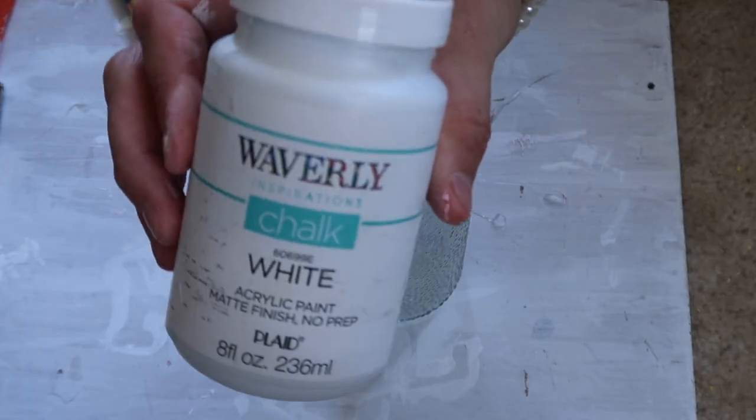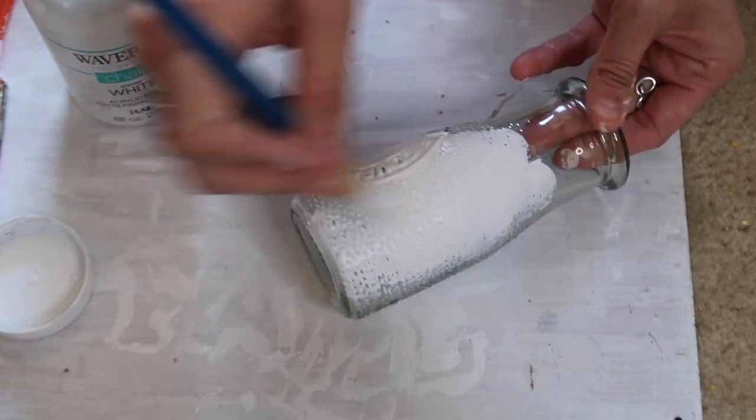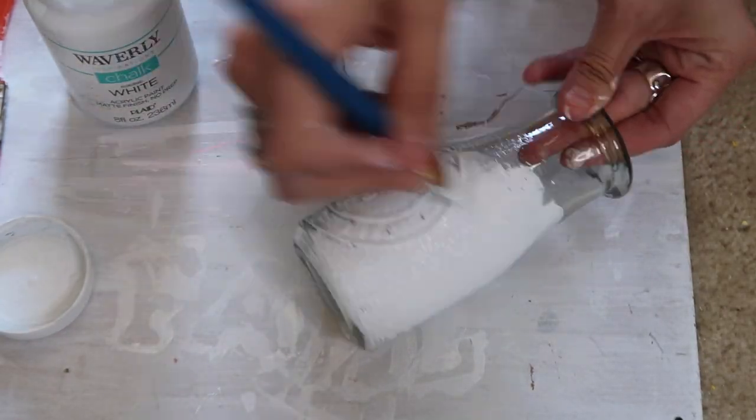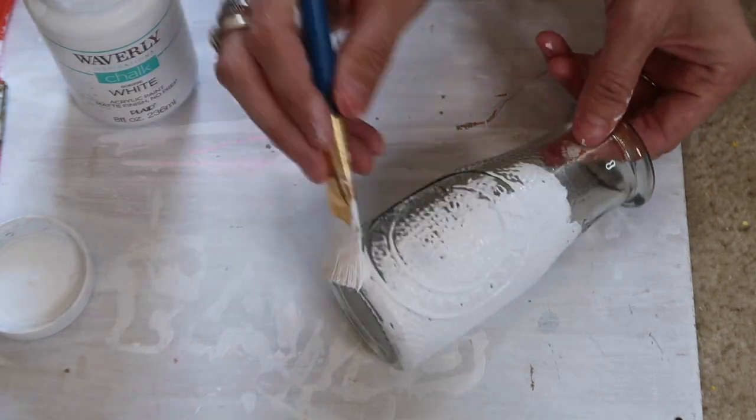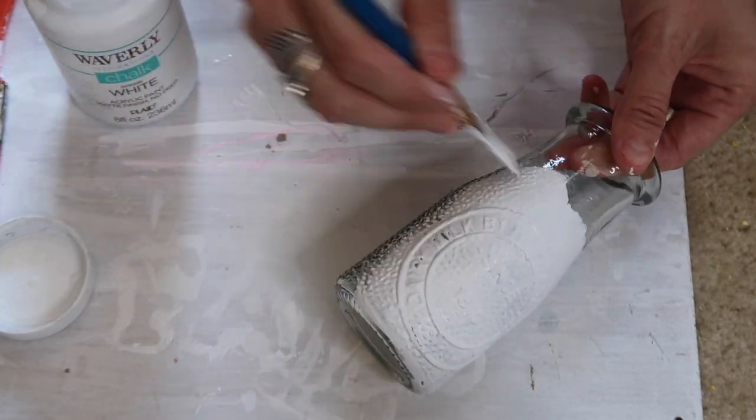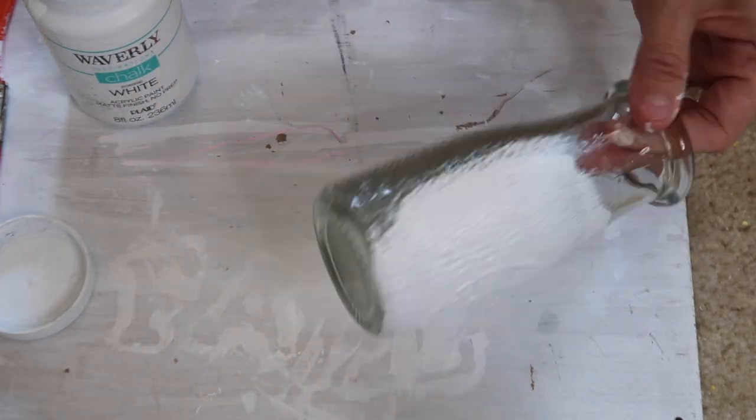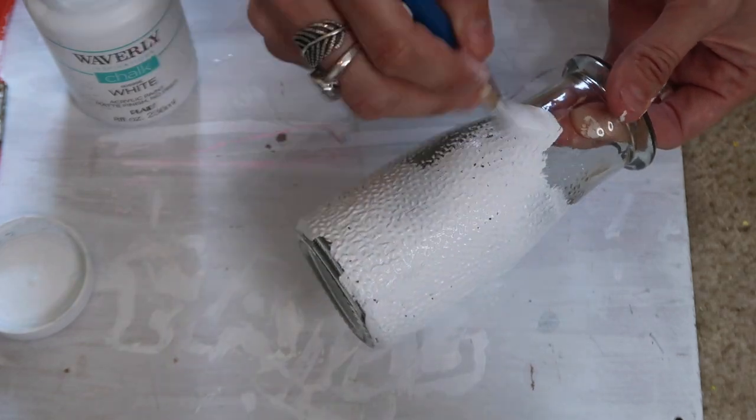So my DIYs are super easy. I'm just going to take two of these little milk jars from the Dollar Tree. I think they're milk jars, that's what I'm going to call them, and I'm just going to paint them with the Waverly chalk paint in white. I did do two coats of this because I wanted them completely covered. I didn't want them distressed, I didn't want anything poking through, so two coats and it worked really good.